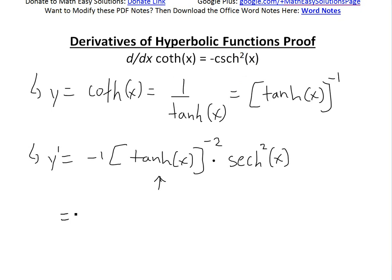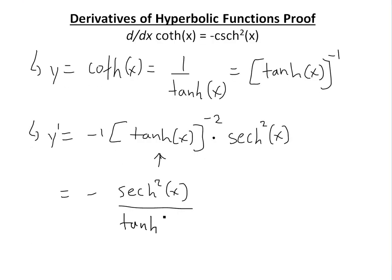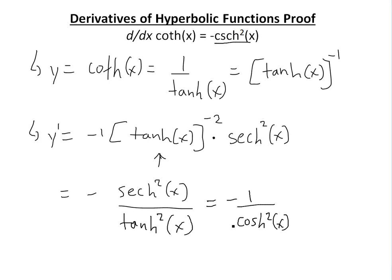This equals, if we simplify further, negative hyperbolic secant squared of x divided by hyperbolic tanh squared of x. We also know that by definition, hyperbolic secant squared of x equals one divided by hyperbolic cosine squared of x.